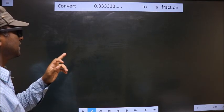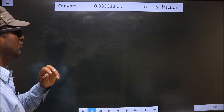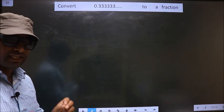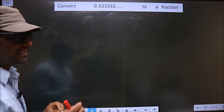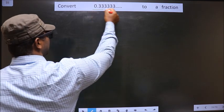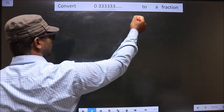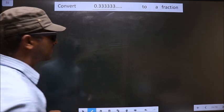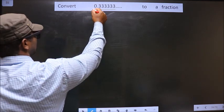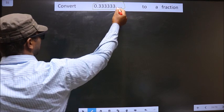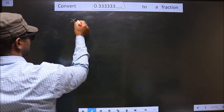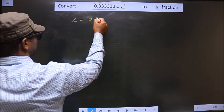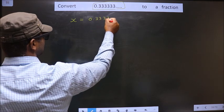Convert 0.333 so on to a fraction. Here we have to convert a recurring decimal, that is 0.333 so on, to a fraction. Whatever we have to convert, we take that to be x. So x is equal to 0.3333 so on.